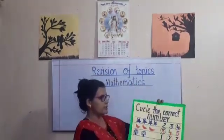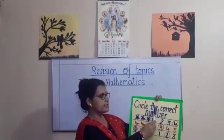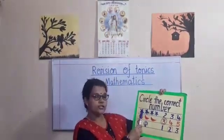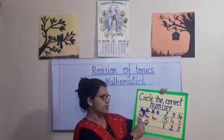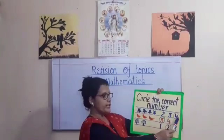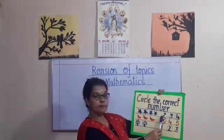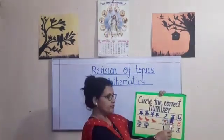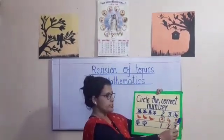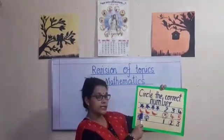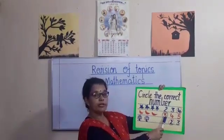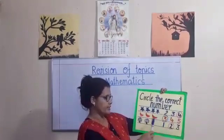The next topic is circle the correct number. You have to count along with me, so start counting these objects. 1, 2, 3, 4. After you count, find out which is number 4. Is this number 4? No. Is this number 4? No. Is this number 4? Yes. You have to circle it. The next line — start counting: 1, 2, 3. Is this number 3? Yes. Then you circle it.